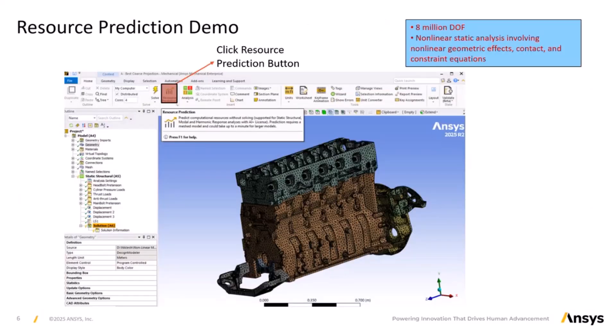Here is a quick demo of how to use the resource prediction tool in the ANSYS mechanical application. This is an example of an 8 million degrees of freedom engine model, which will undergo a non-linear static analysis involving non-linear geometric effects, contact, and constraint equations. To estimate the computational resources required for this analysis, you can simply click the resource prediction button, located adjacent to the solver button. Once activated, the tool provides detailed predictions including runtime estimates, memory usage, and disk space.